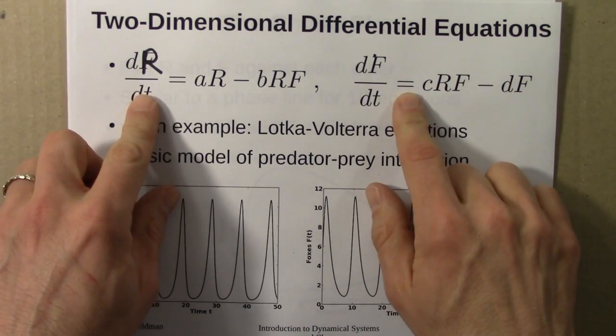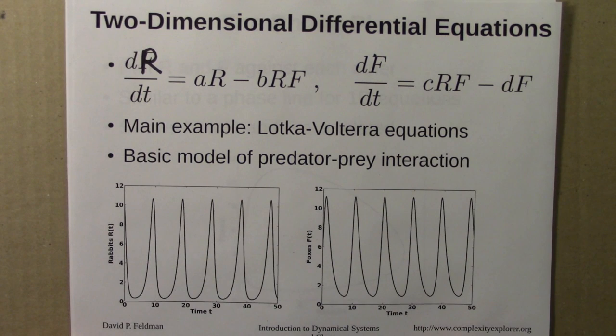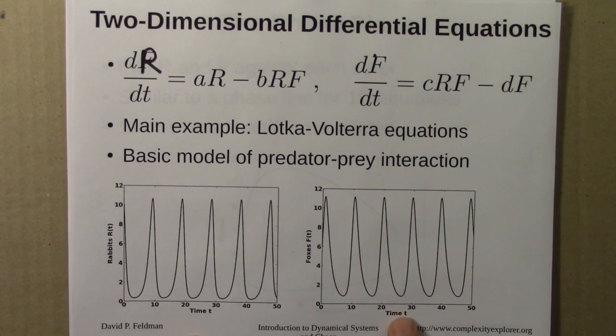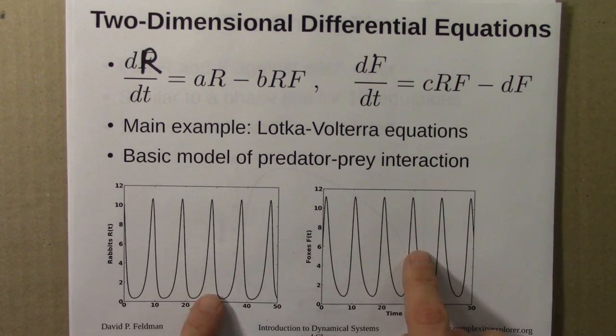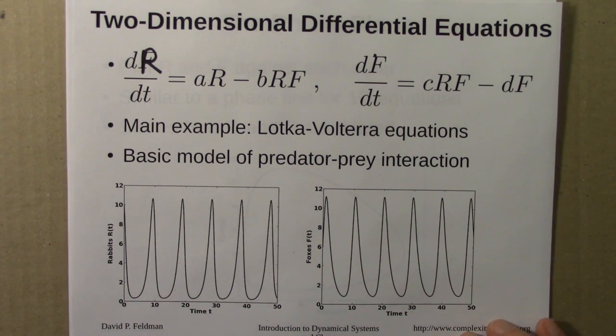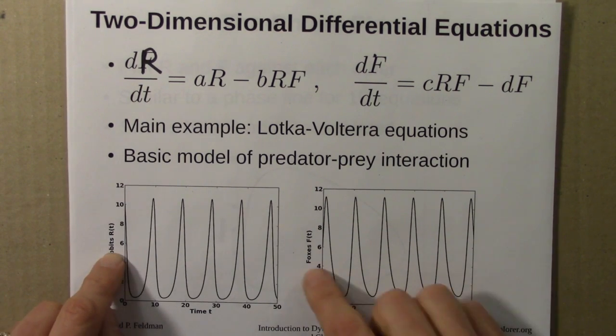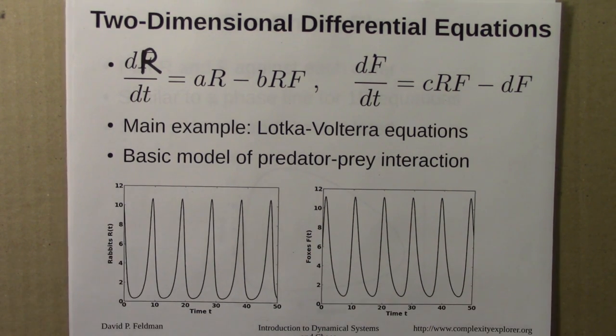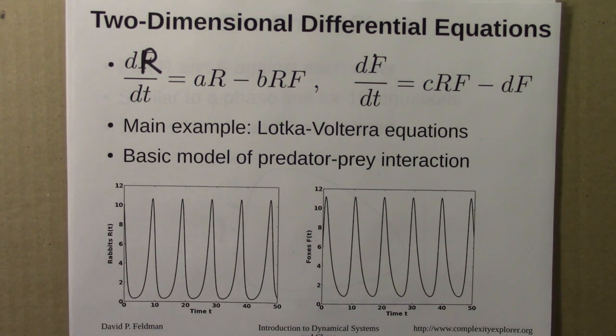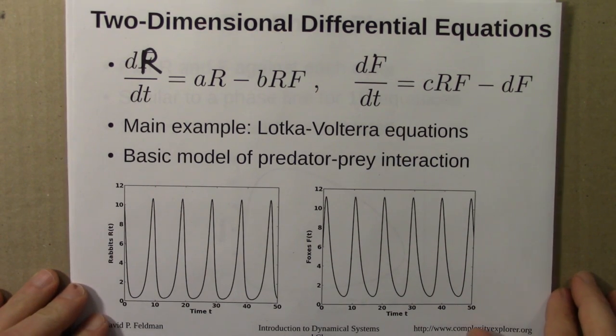So we can solve these differential equations using Euler's method or the like, and we have two solution curves. This is rabbits as a function of time, and these are the foxes as a function of time. We notice that they oscillate. To get a qualitative picture of what's going on and how R and F are related to each other, we can plot R against F and get rid of time.